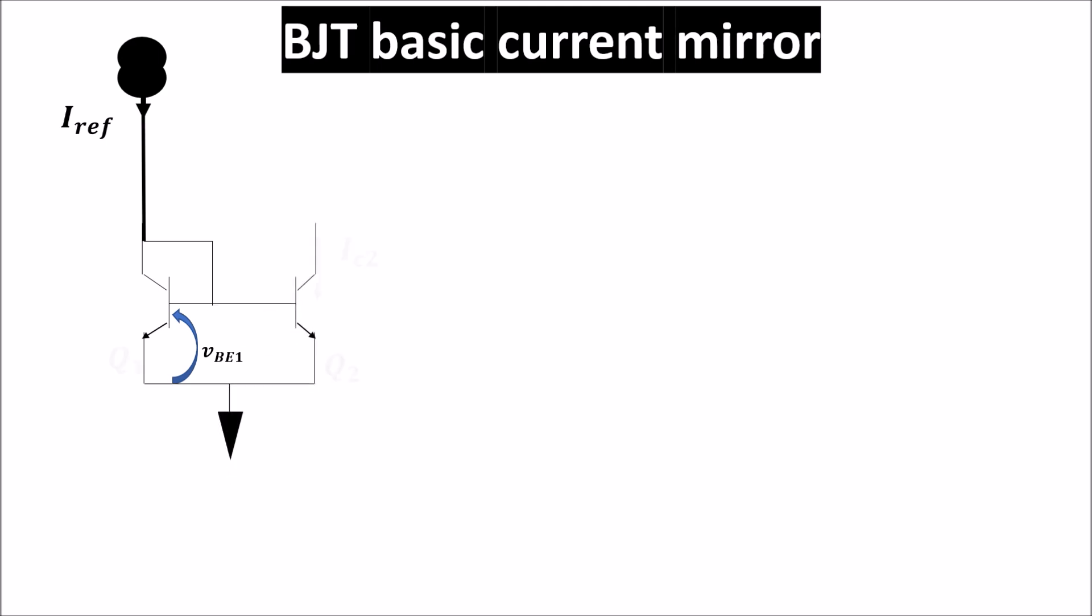We call Q1 and Q2 the transistors and IC2 is the collector current of Q2 so our mirrored current. We see that in this configuration VBE1 is equal to VBE2 and since the collector current of a BJT depends mainly on the base-emitter voltage we should have the same current in the two branches.